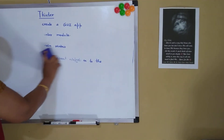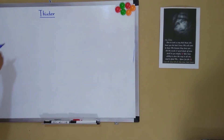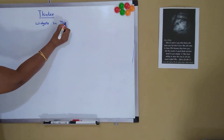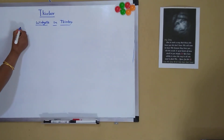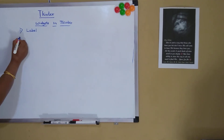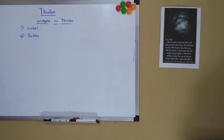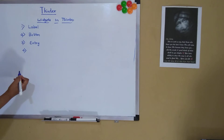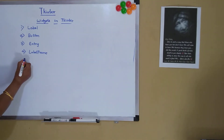Now, what are the different widgets available in tkinter? There are around 20 widgets. Let's name a few of them. The first is label, second is button, third is entry, fourth is label frame, and fifth is frame.